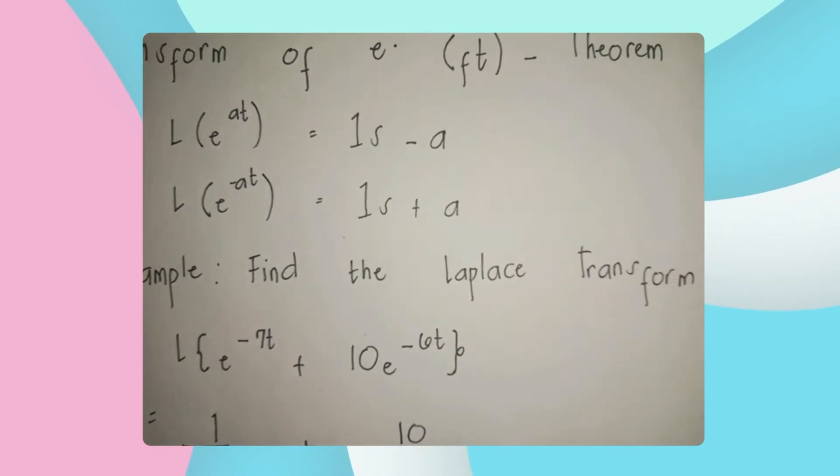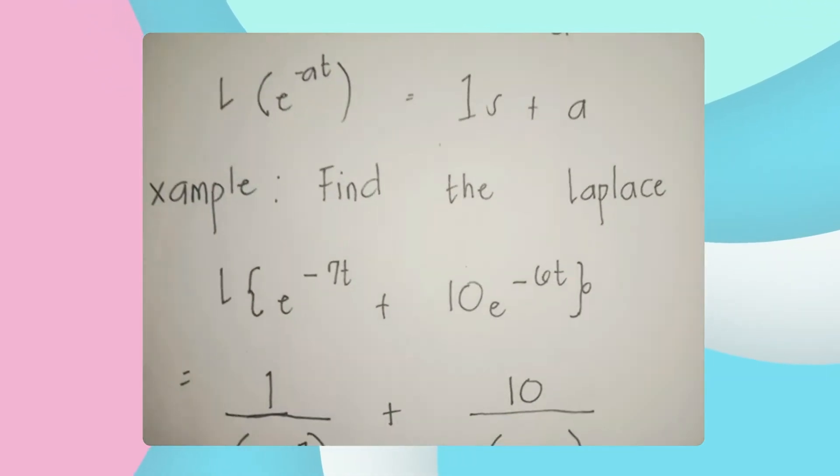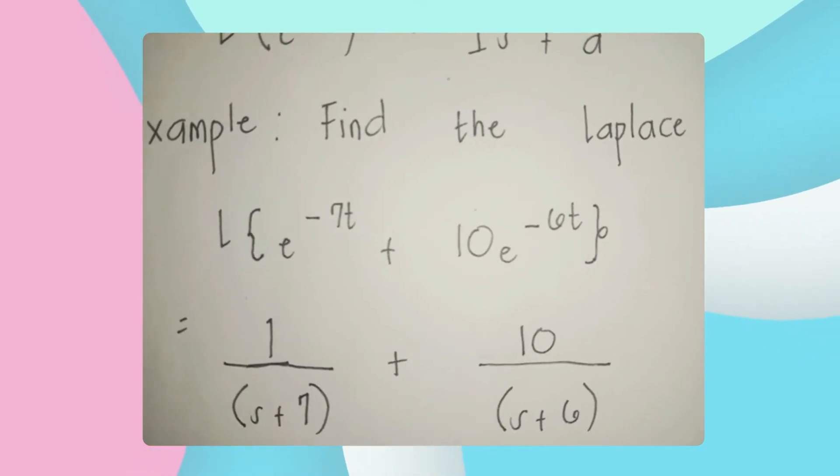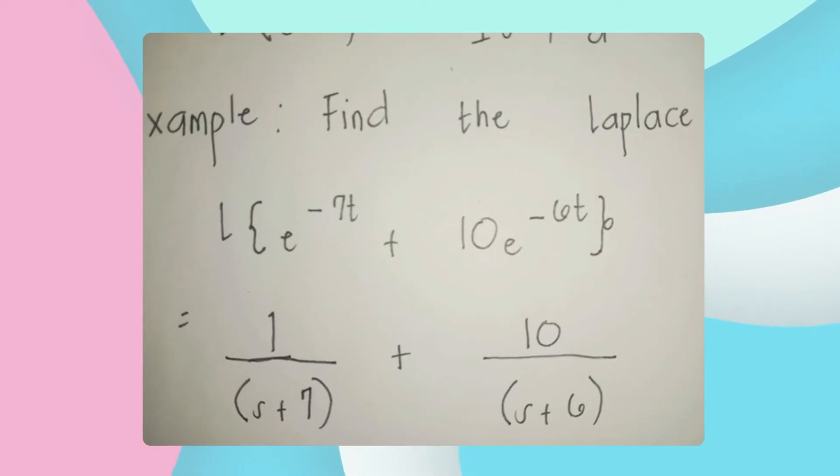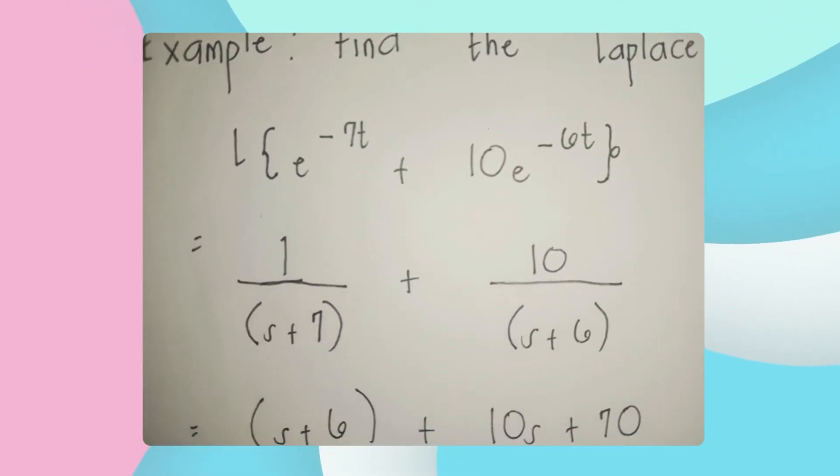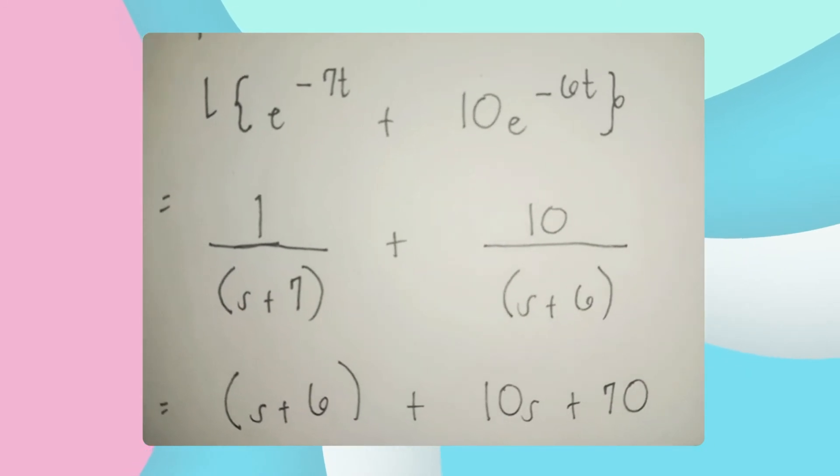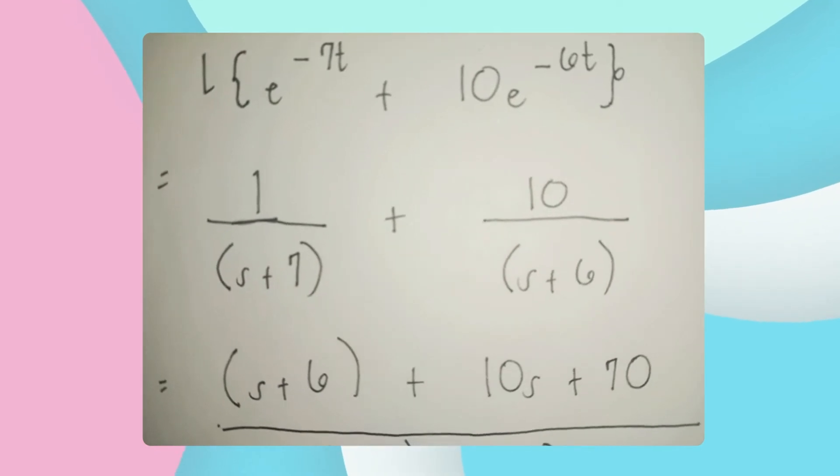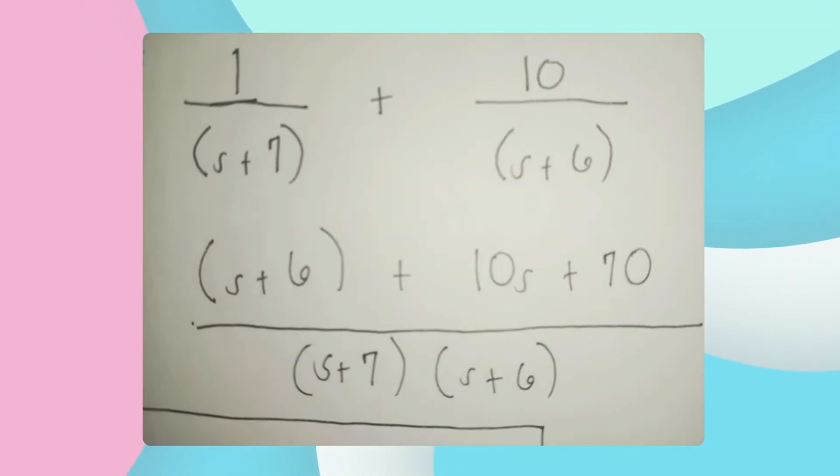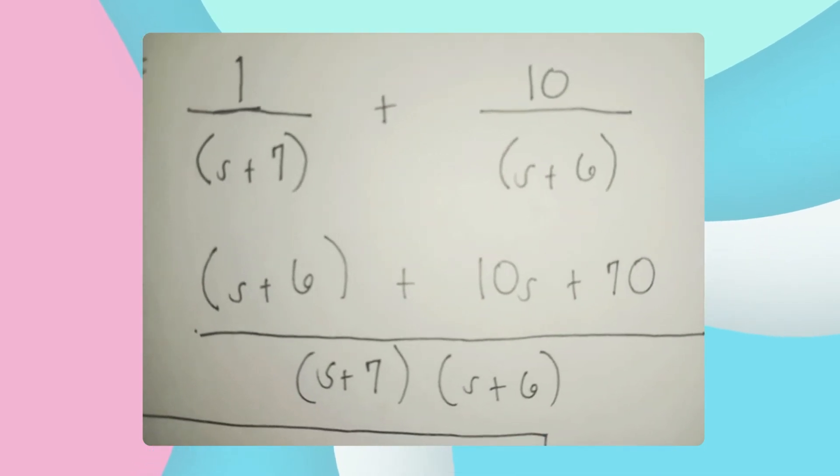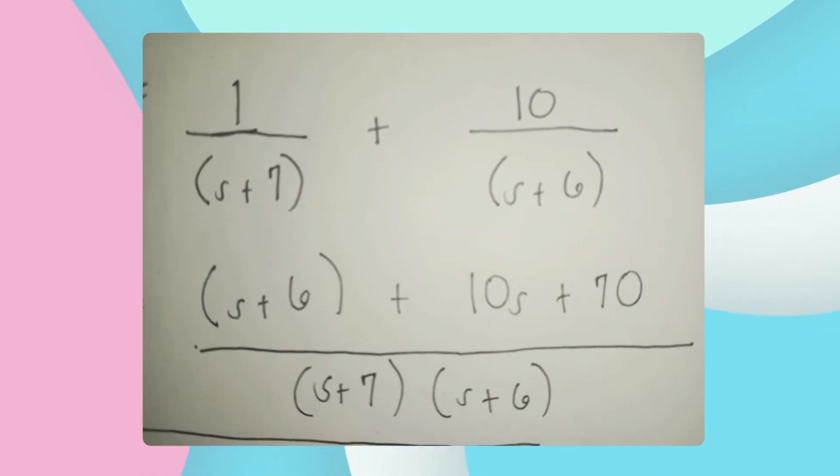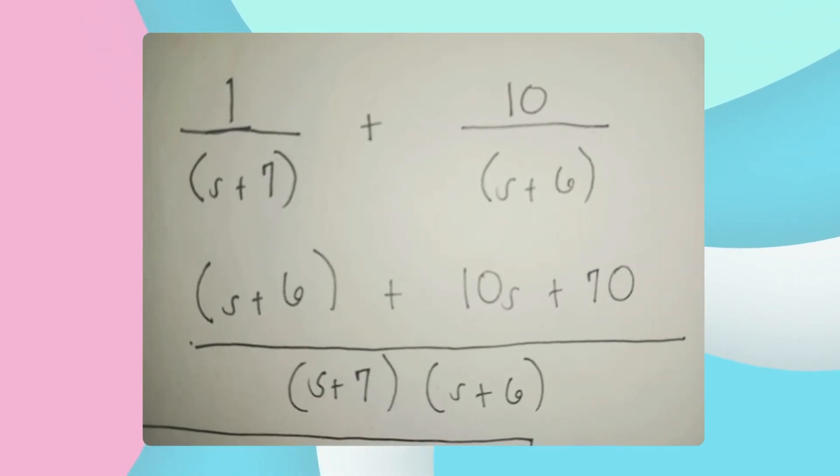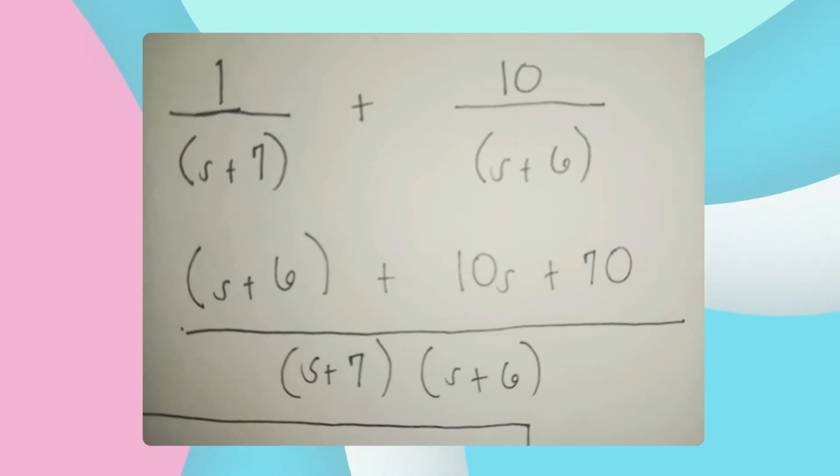Example: find the Laplace transform of the following. Laplace transform of e raised to the power of negative 7t plus 10e raised to the power of negative 6t. The next is 1 over s plus 7 plus 10 over s plus 6. Then the next thing to do is cross multiply. 1 times s equals s or 1s plus 6 times 1 equals 6 plus 10 times s equals 10s, and 10 times 7 equals 70 all over s plus 7 times s plus 6. Just copy the denominators.